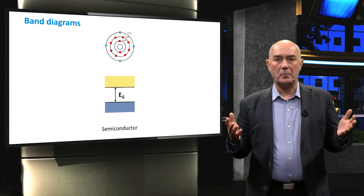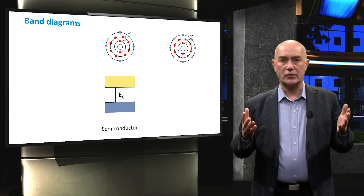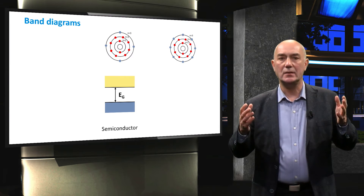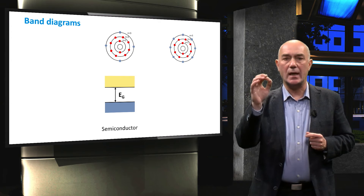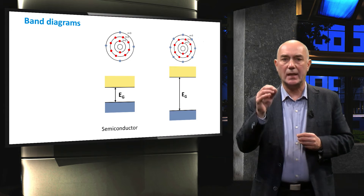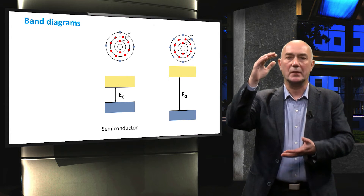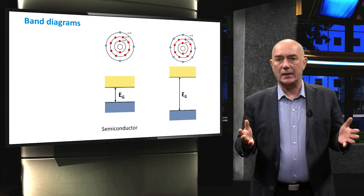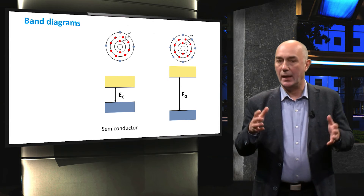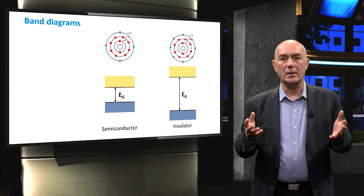Elements of which the valence shell is about half full are semiconductors. Elements with valence shells that are completely filled or almost completely filled have very different electrical properties. The valence electrons of these elements are strongly bound to the atom. These elements have a very large band gap and the valence electrons require a very large amount of energy to be released from the valence shell. As a result, these elements have a relatively small amount of mobile electrons at room temperature and therefore conduct electricity very poorly. These elements are called insulators.